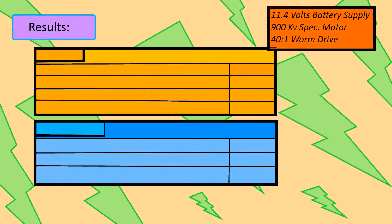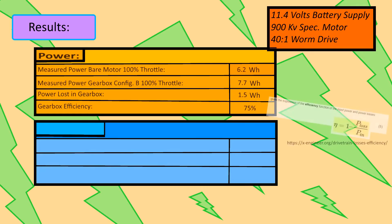Using a 3-cell lithium polymer at 11.4 volts with a 900 KV spec motor into the 40 to 1 worm drive, here are the results. For power, using the modified gearbox components, we were able to get the efficiency to about 75%, wasting about 1.5 watts in the drivetrain in an unloaded 100% throttle state.